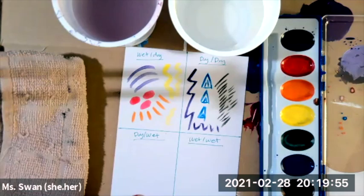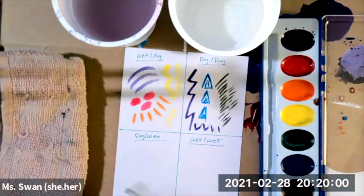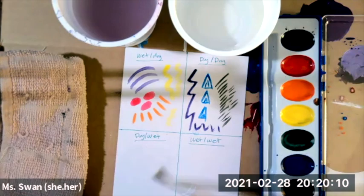To start, I'm going to get my paper wet. I'm literally just brushing water onto the paper so that it starts to absorb. Not too, too, too wet so that it gets soggy.